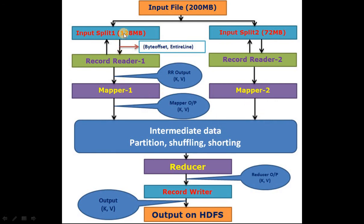The number of input splits equals the number of Record Readers and mappers. Both mappers pass their output to the intermediate layer, which has three stages: partitioning, shuffling, and sorting. After partitioning, shuffling, and sorting, the intermediate data is passed to the reducer. The number of partitions equals the number of reducers — here there is only one partition, so there is only one reducer. The reducer processes the data and its output is passed to the Record Writer.